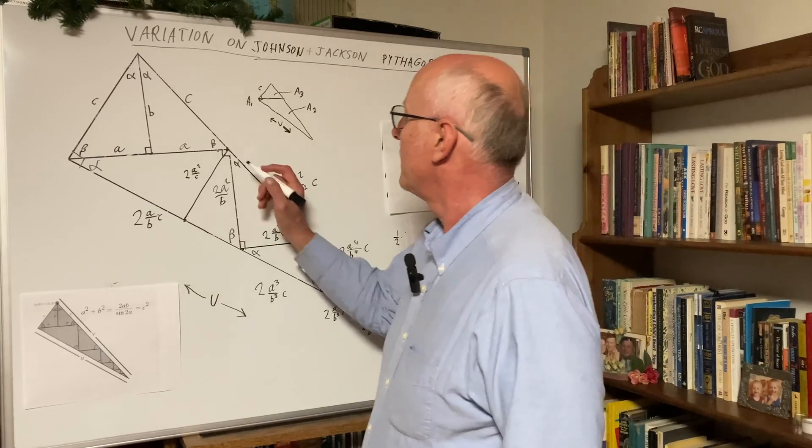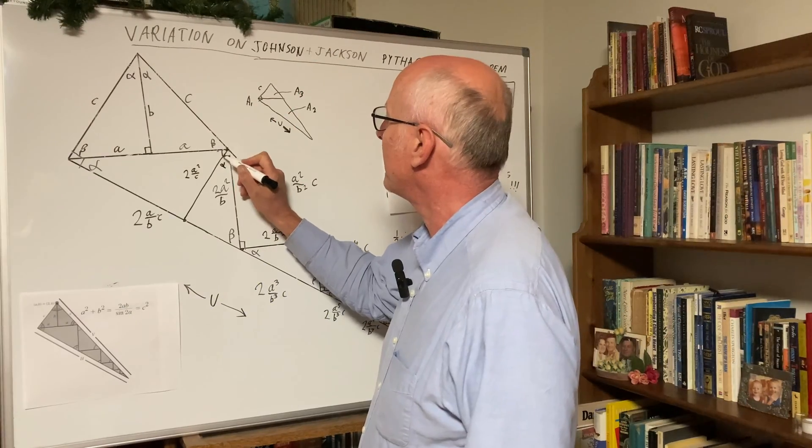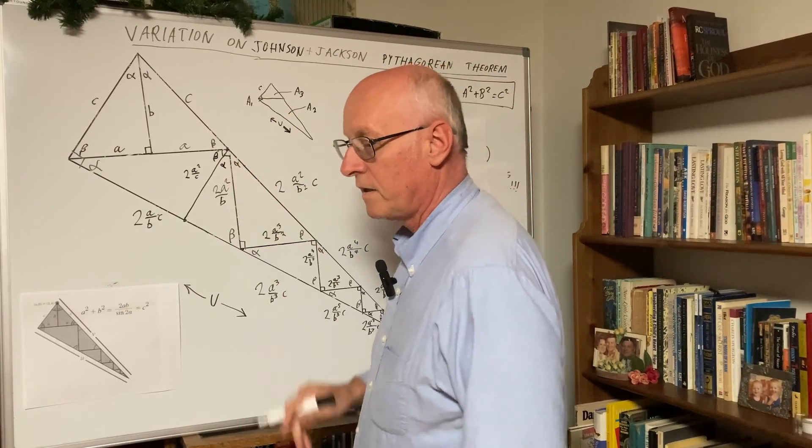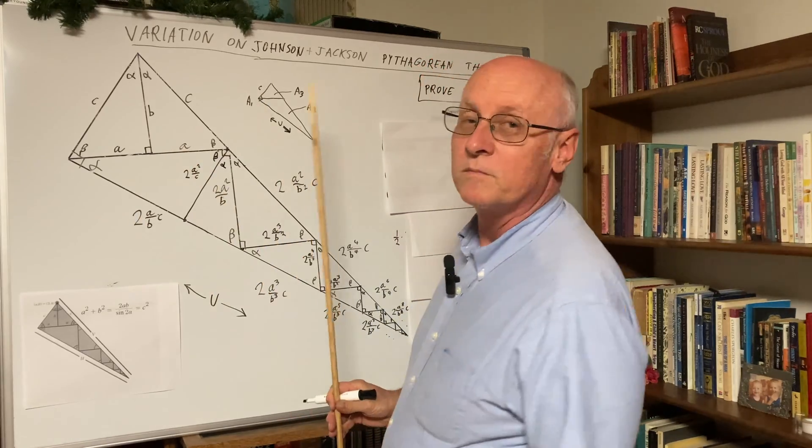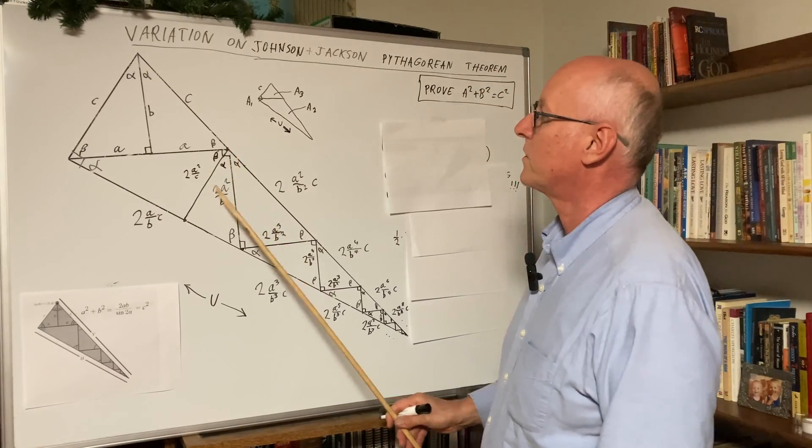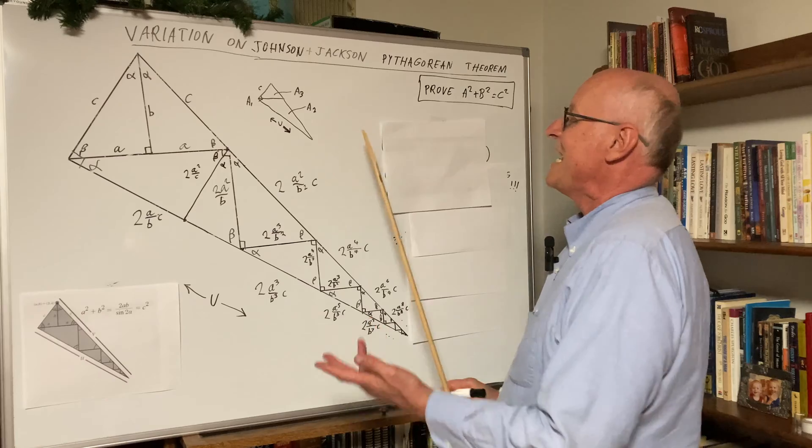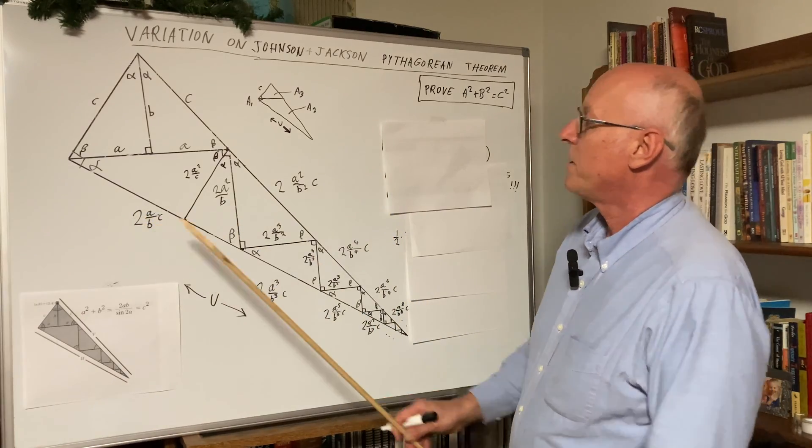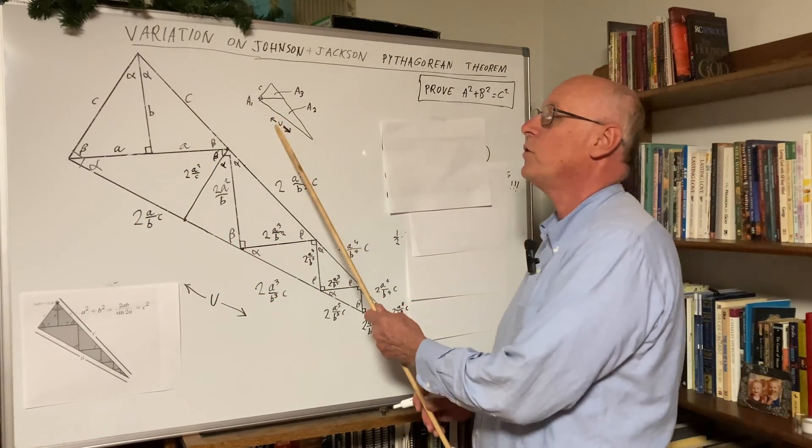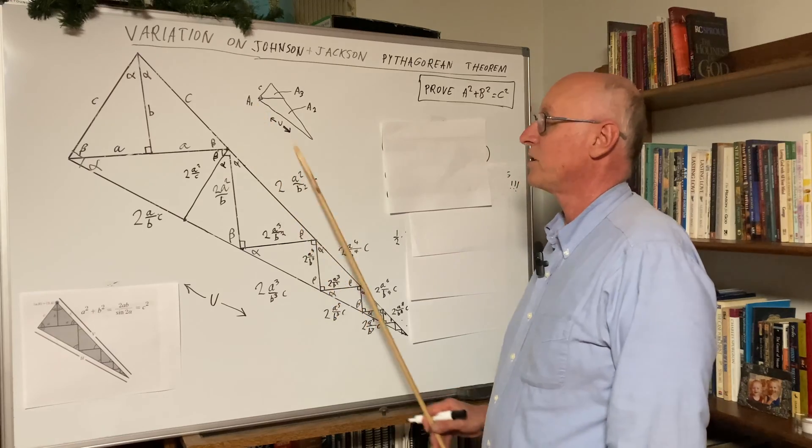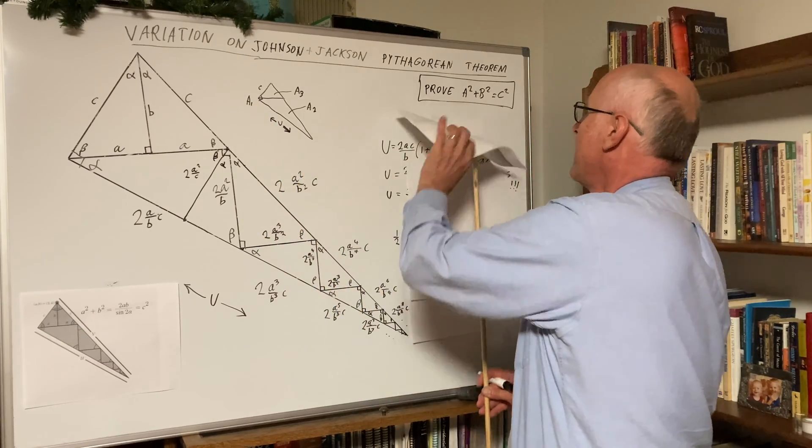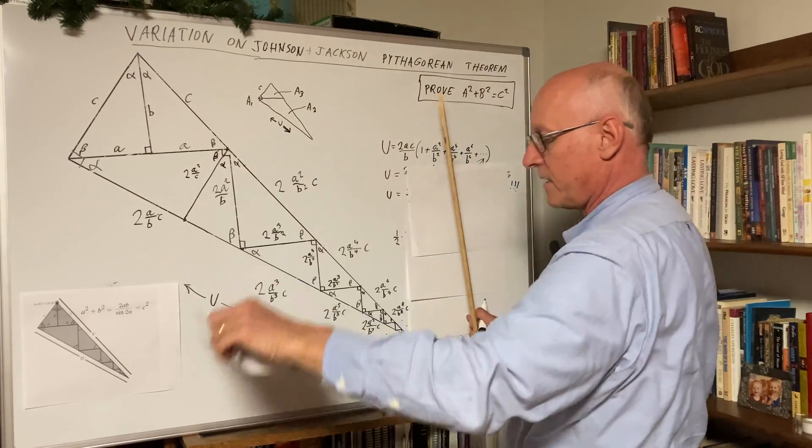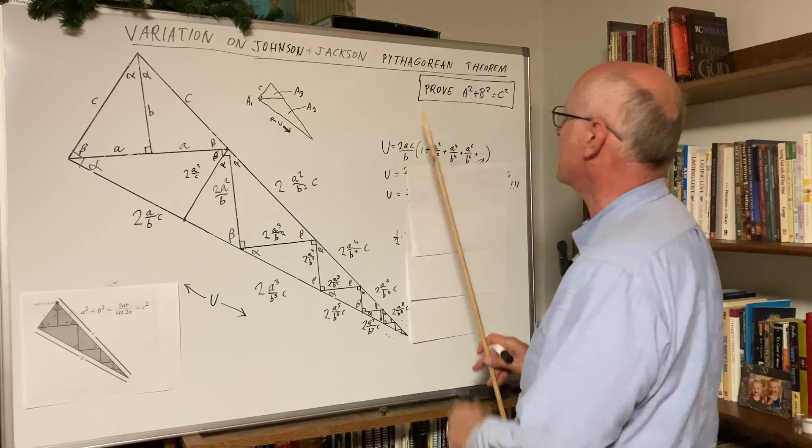Okay, so now we have this 2a squared over c. And we have alpha here, and we have beta. And so those are the angles. These are similar triangles. And so now our job is to find this u, this distance u, which is, voila, it's an infinite geometric series.